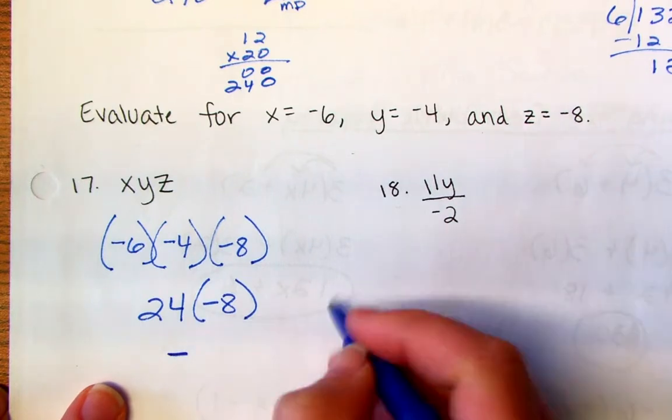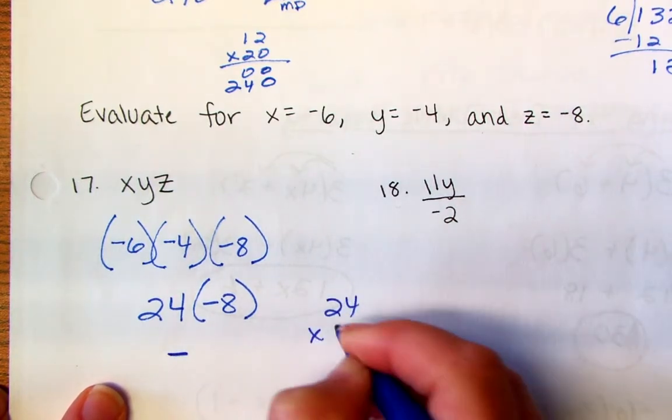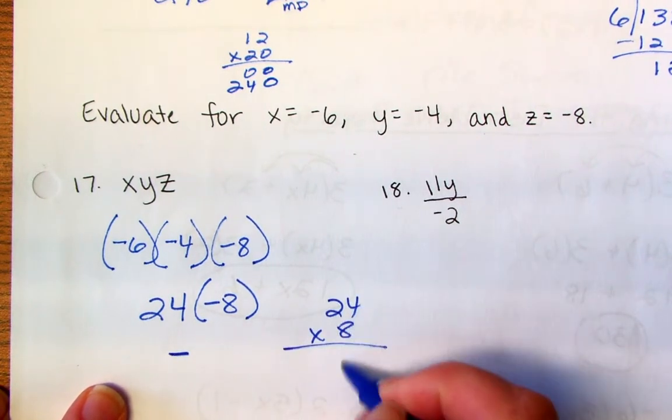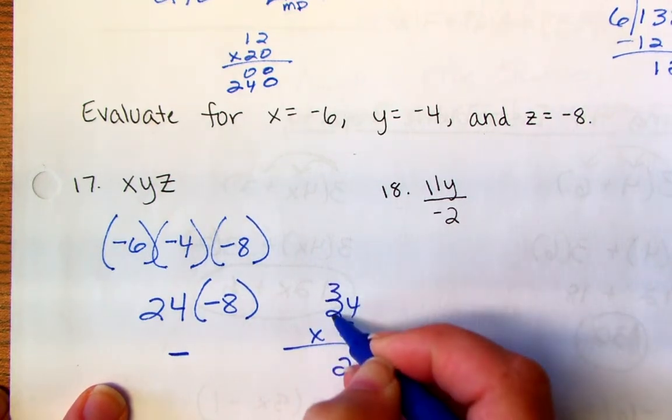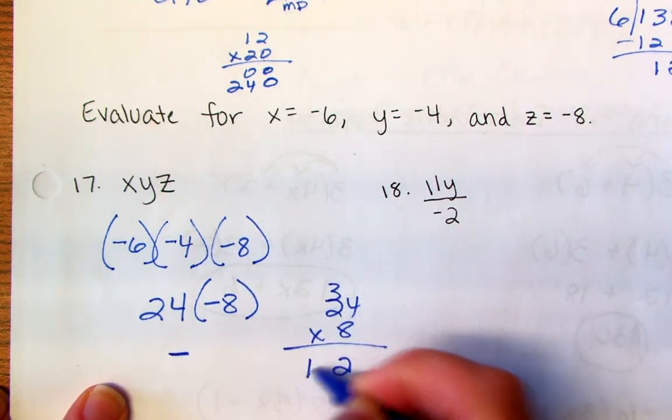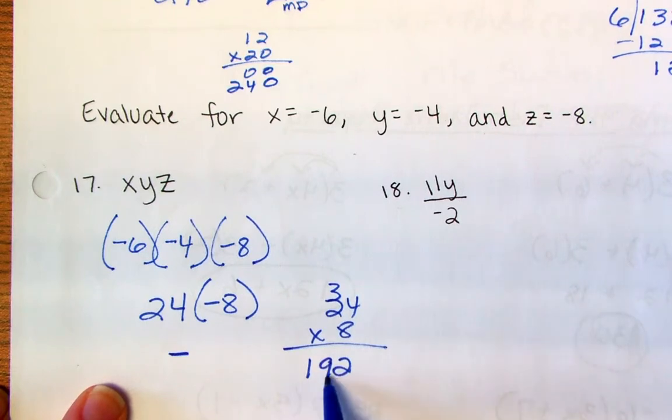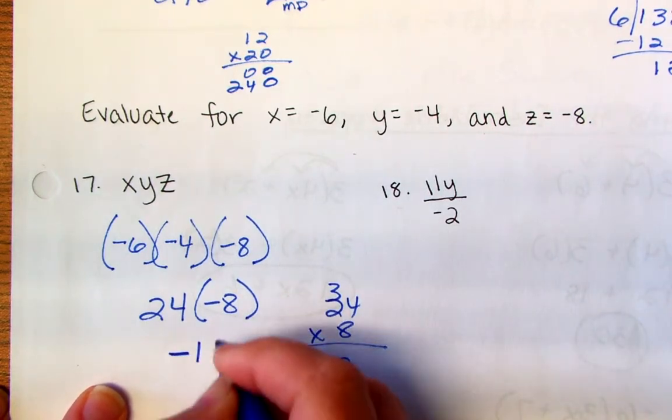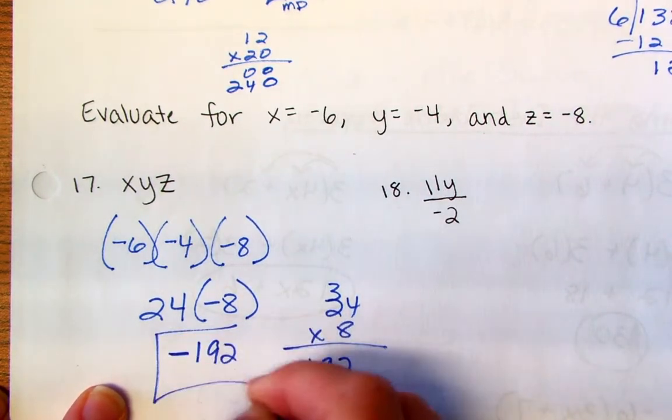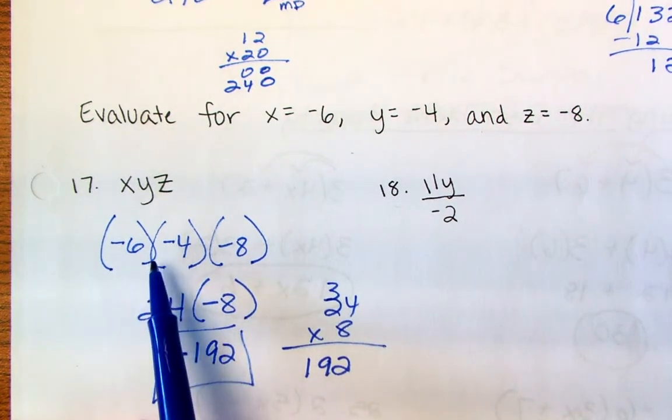So I'm going to go ahead and do this old school off to the side. Again, because you're not lazy. 8 times 4 is 32, 8 times 2 is 16, 16 plus 3 is 19, so 192, so a negative 192. So just remember to take your time and go two at a time.